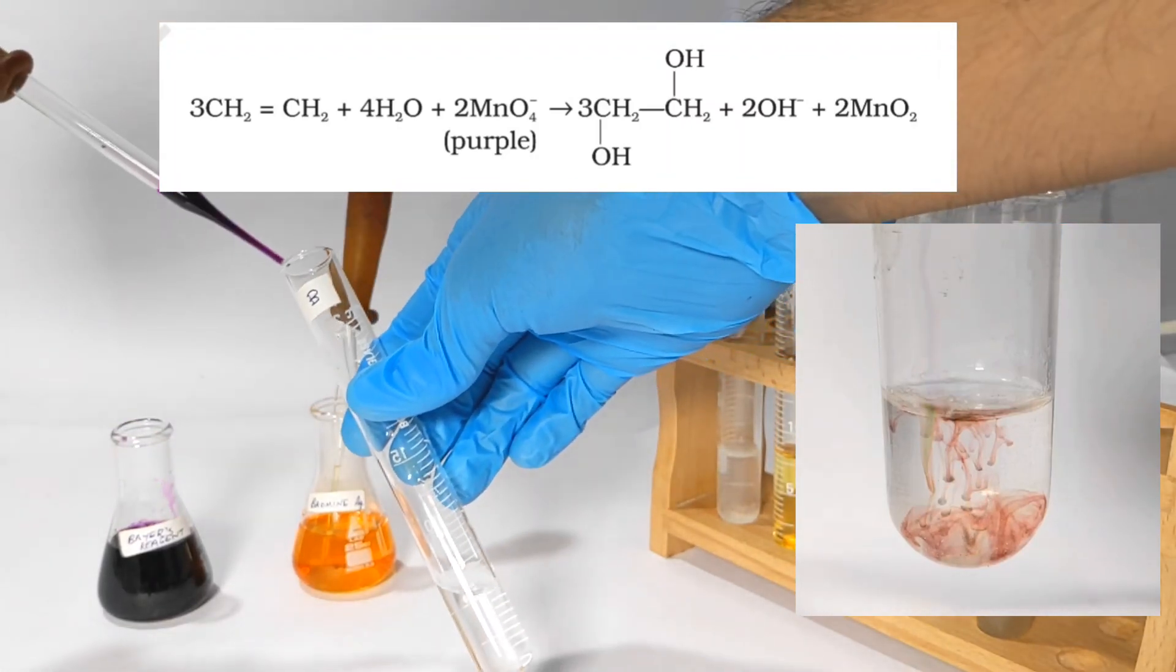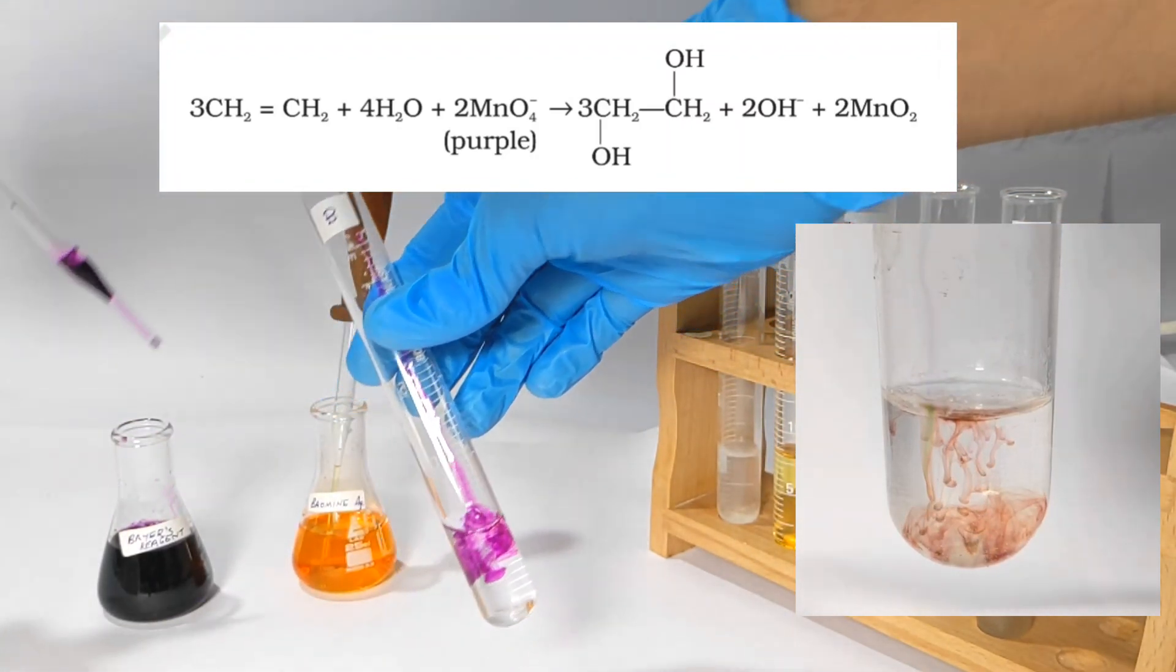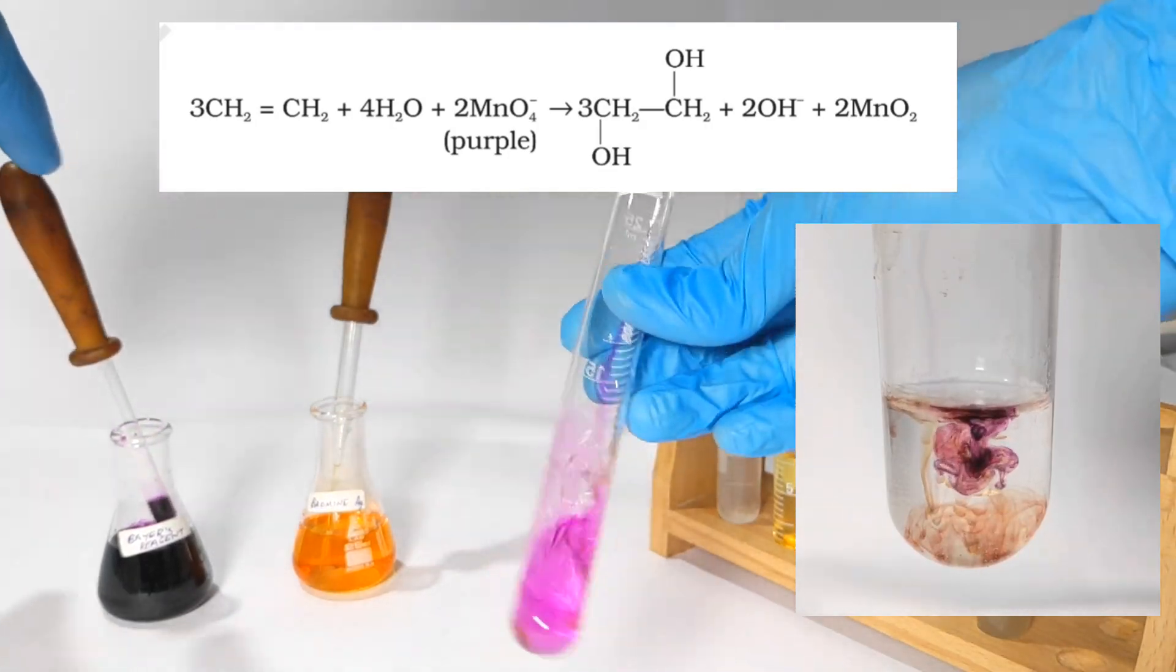You can see that the purple color of permanganate persists in test tube B which means there is no reaction in test tube B.